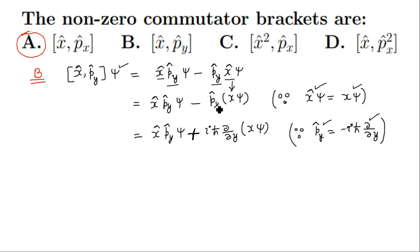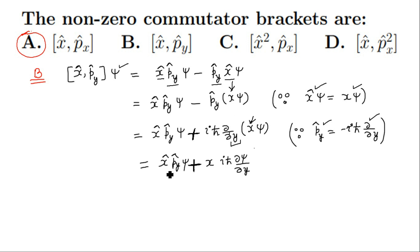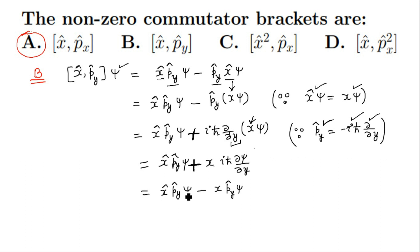Putting the value of p-y-cap, the equation becomes x-cap p-y-cap psi plus iota h-cross del by del y of x psi. Since the partial derivative is with respect to y and x is independent of y, x can be taken outside the partial differentiation. The equation becomes x-cap p-y-cap psi plus x times iota h-cross del by del y. Using the definition of p-y-cap again, this becomes x-cap p-y-cap psi minus x p-y-cap psi.